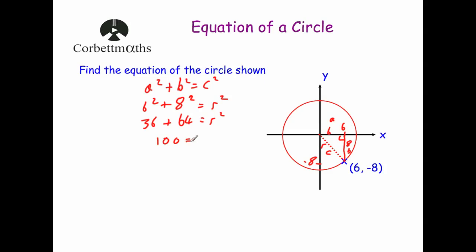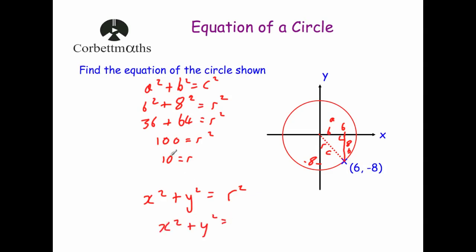6² is 36 and 8² is 64, giving 100 = r². Since r is a length, r = 10. Those who know their Pythagorean triplets will recognise 3-4-5, and doubling gives 6-8-10, so the radius is 10. The equation of the circle is x² + y² = r², and since r = 10, that's x² + y² = 100. If r² hadn't been a perfect square, you could just substitute the value directly into the equation.